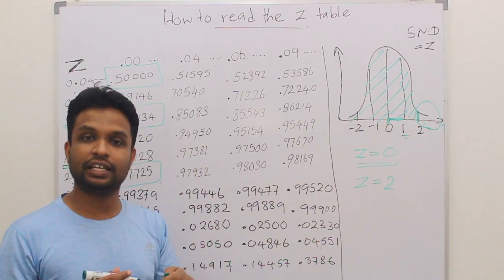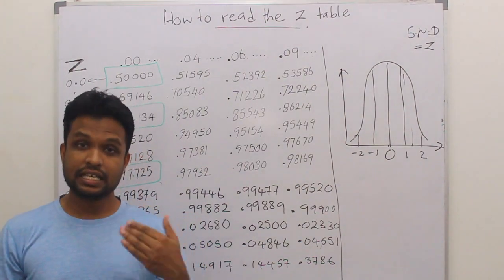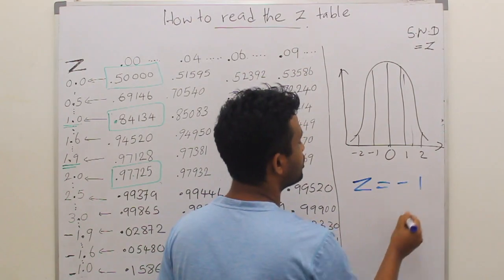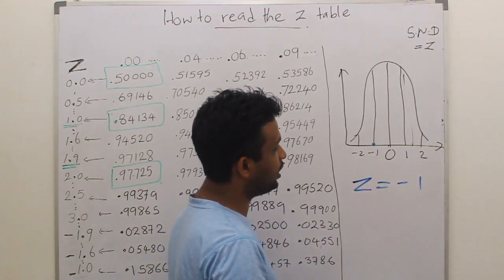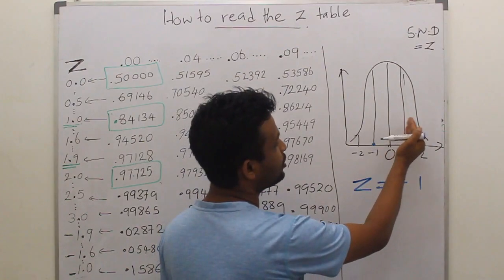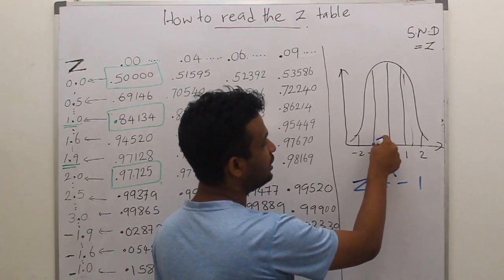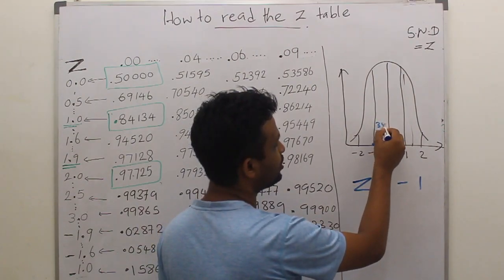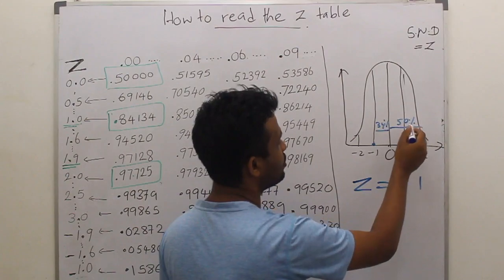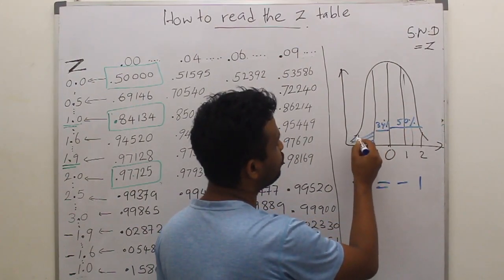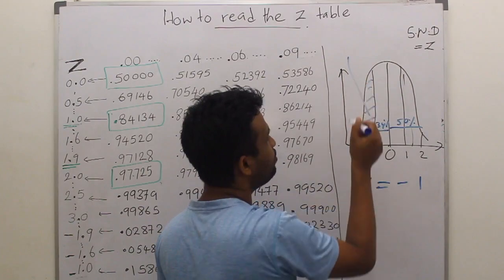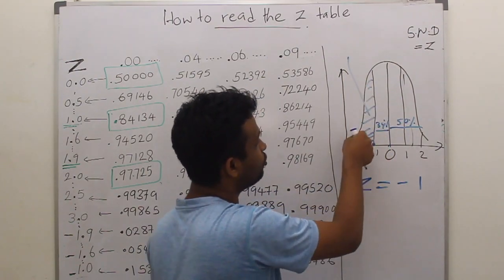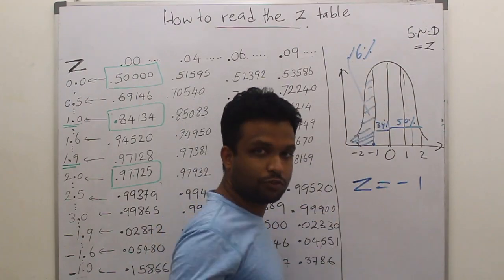We'll take another example. Let's consider Z equals minus 1. Z equals minus 1. That means the point is somewhere here. We know that 50% of the values are there, and another 34% here. This area we have 34%, and from this area we have 50%. So the area towards left from minus 1 SD should be approximately 50 plus 34 equals 84.